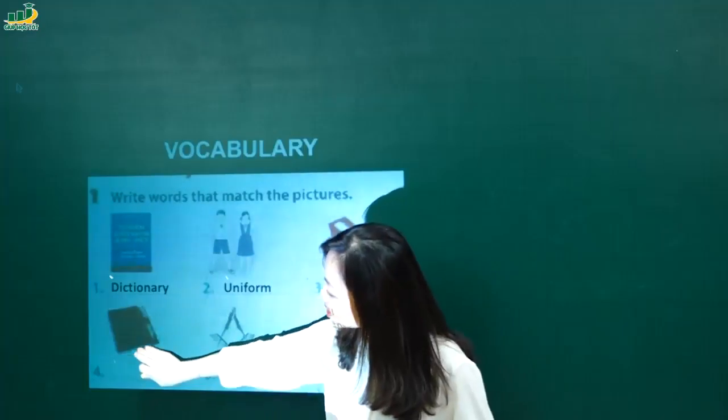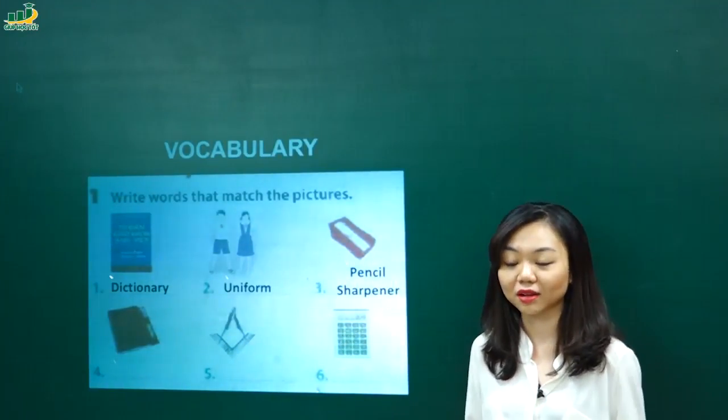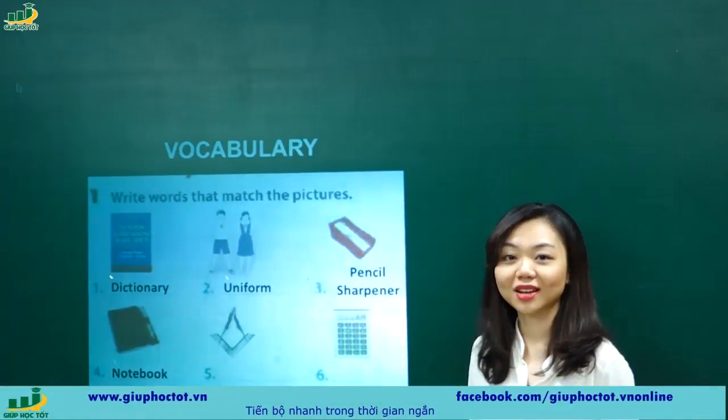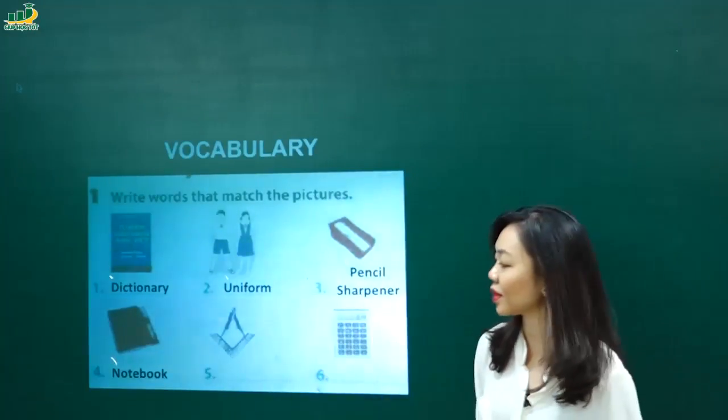Tiếp theo, number four. What is number four? Số bốn là gì đấy nhỉ? Nó là một quyển vở. Cái mạng quyển vở hay là quyển tập vở hoặc là tập. Chính là notebook. Notebook. Notebook. Good. Trọng âm đầu tiên nhé. Notebook. Xong.